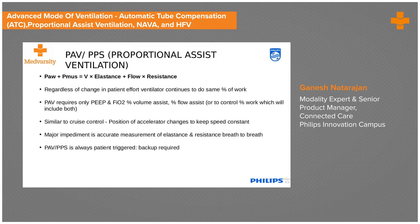Many ventilators in this country have not yet adopted proportional assist ventilation. This mode was first launched by Respironics in its non-invasive ventilation and then moved to invasive equipment, but it is still not very popular here. When using PAV, always have a patient-triggered backup ready, because if the machine cannot determine whether flow assist or volume assist is needed based on the patient's compliance, there must be a backup ventilation.